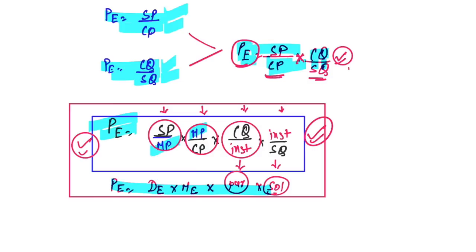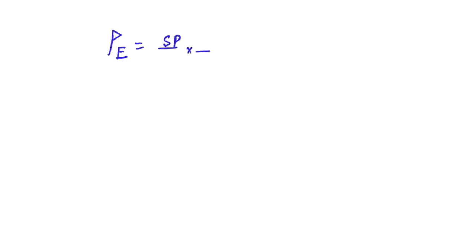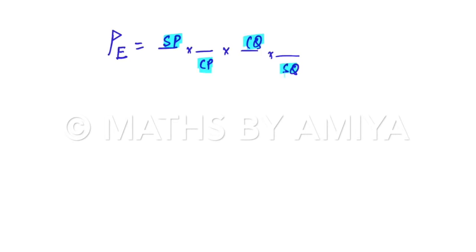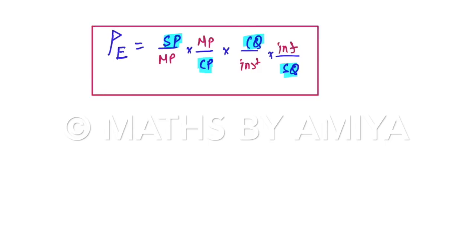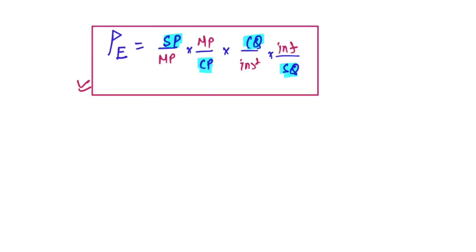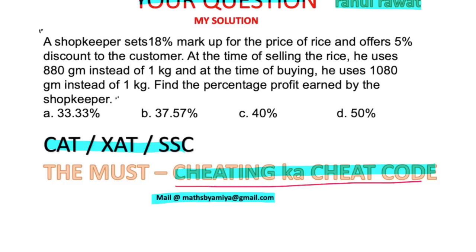The cheat code: profit effect = (selling price / mark price) × (mark price / cost price) × (cost quantity / instead of) × (instead of / selling quantity). This solves 99.99% of cheating questions except adulteration, which requires an extra addition. Just understand and learn this formula. Now let's apply it to our question.